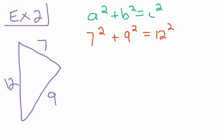Now we add these together. 7 squared is going to give us 49. 9 squared is going to give us 81. 12 squared is going to give us 144.